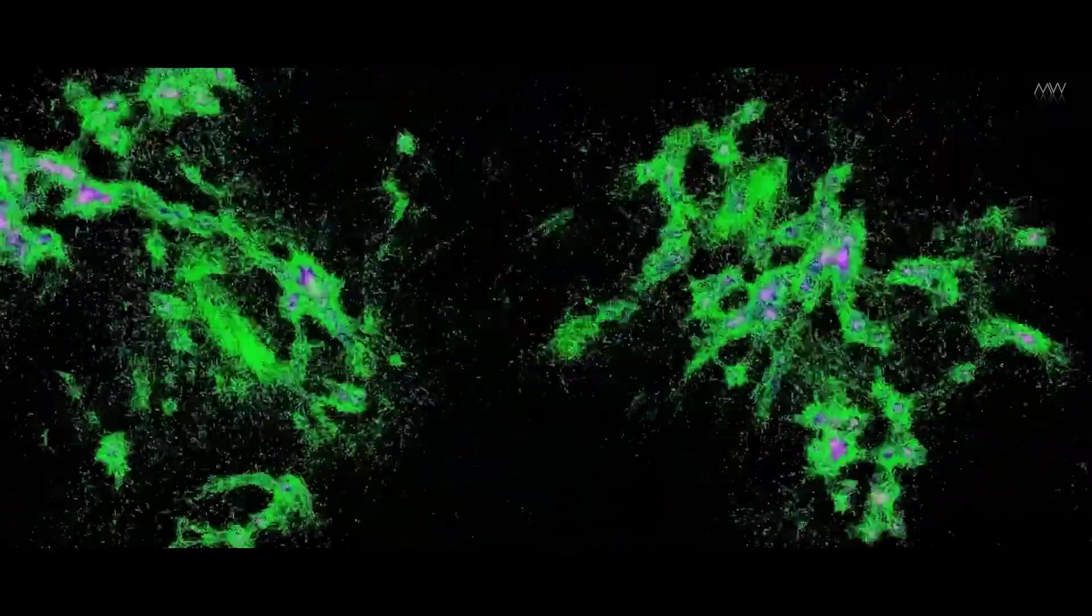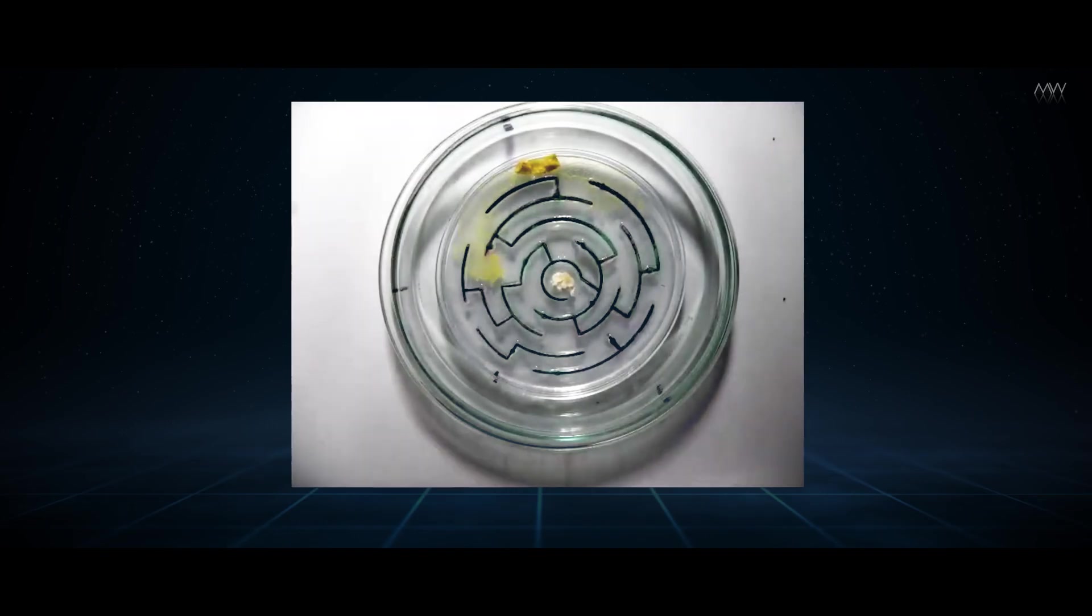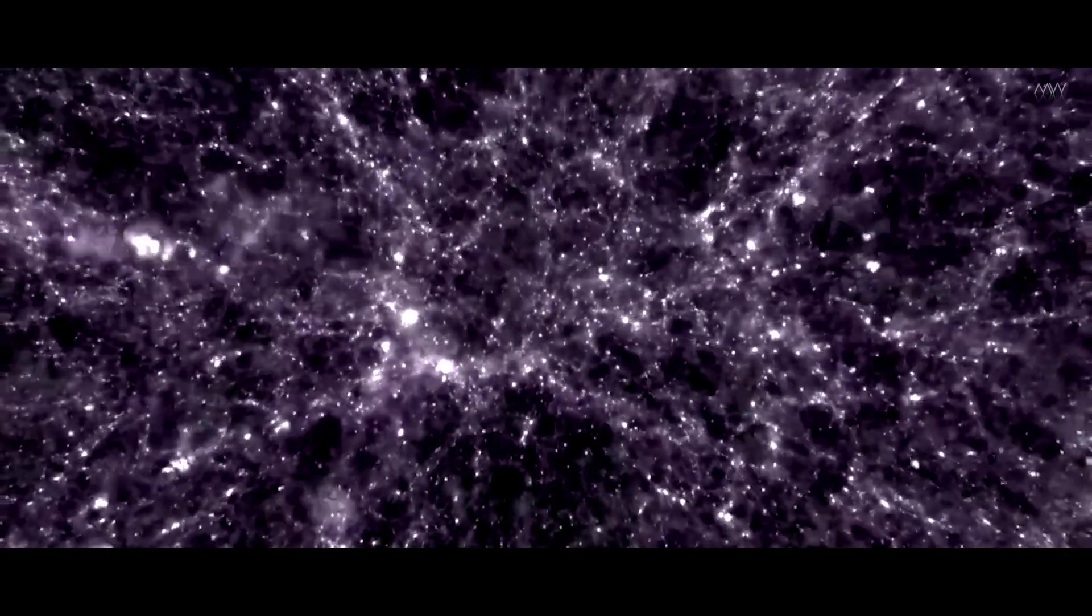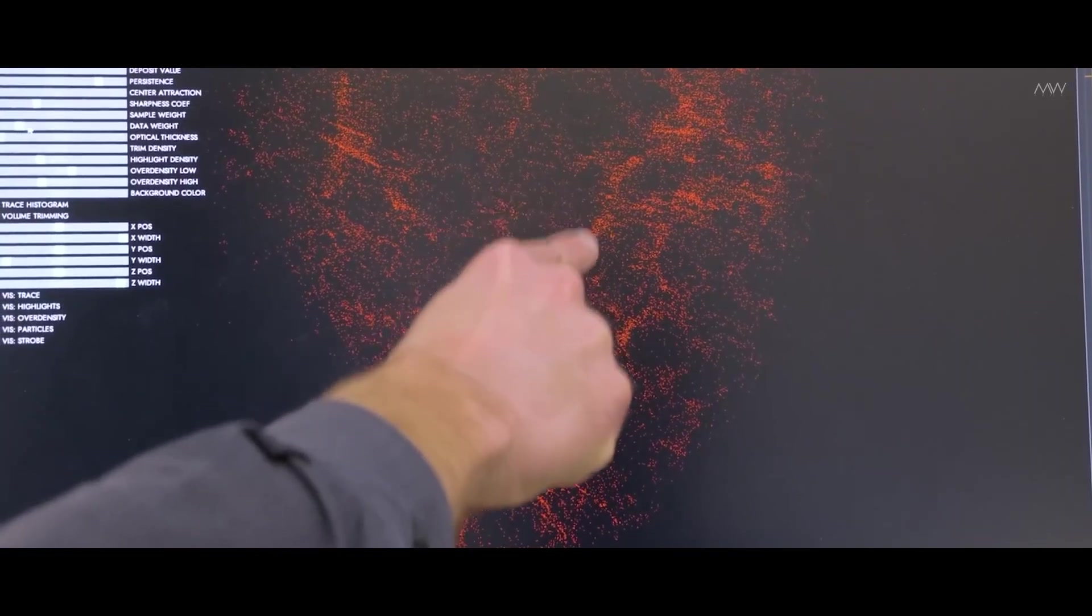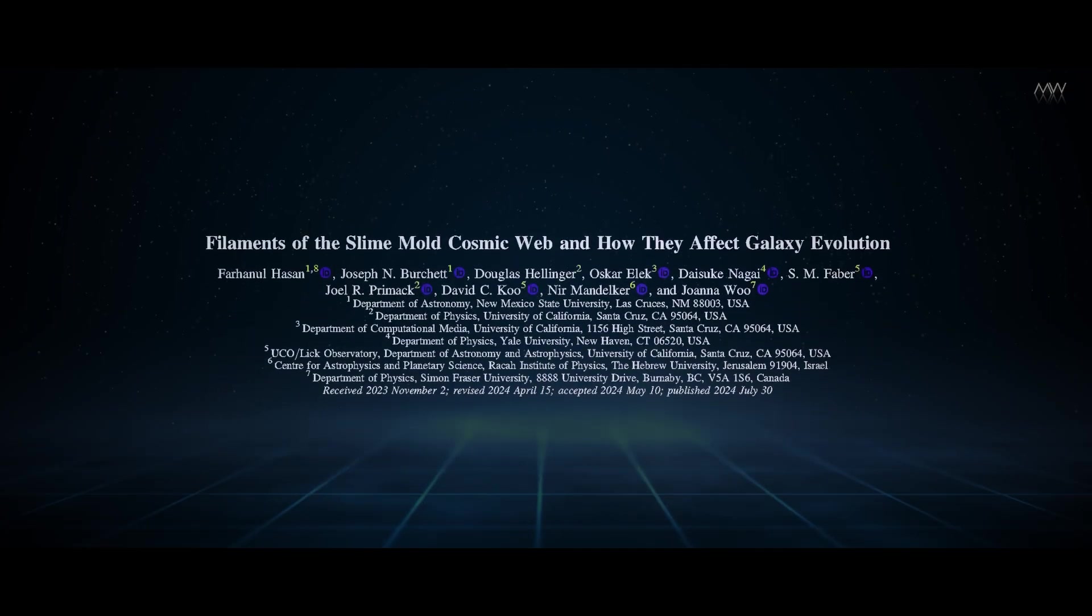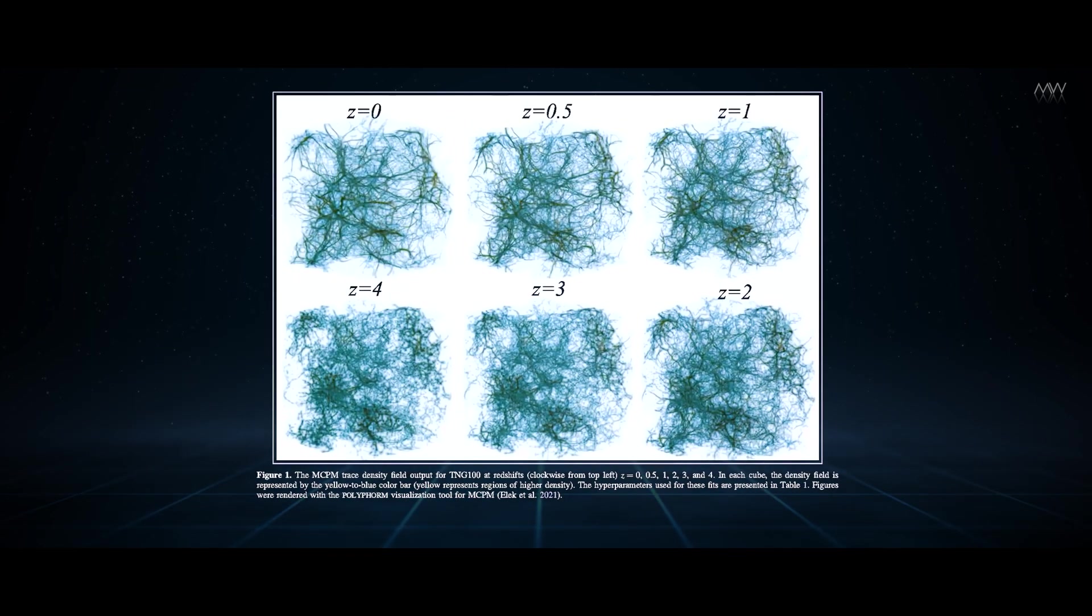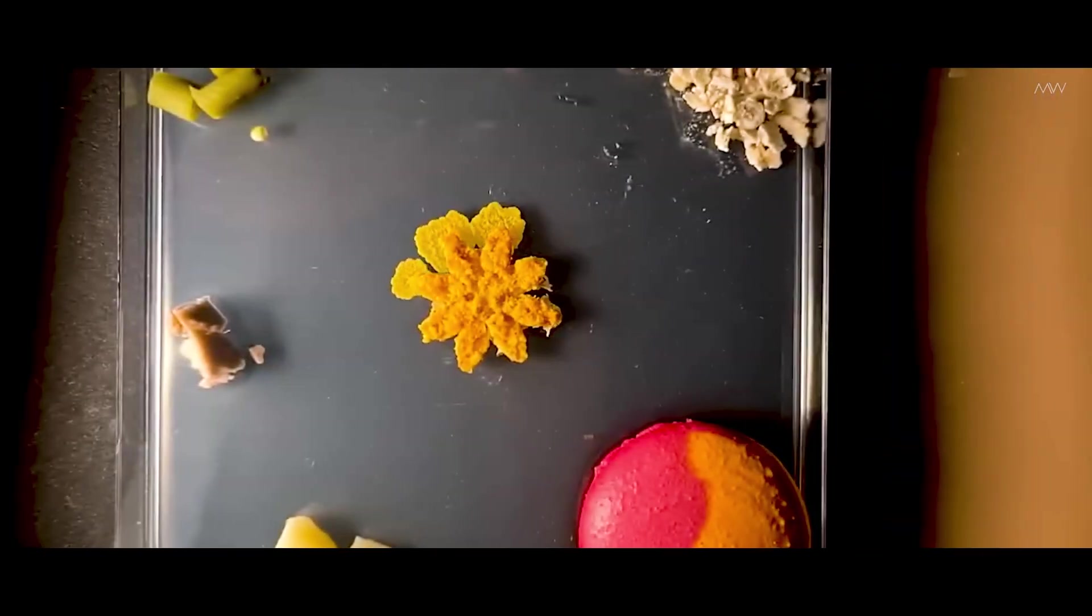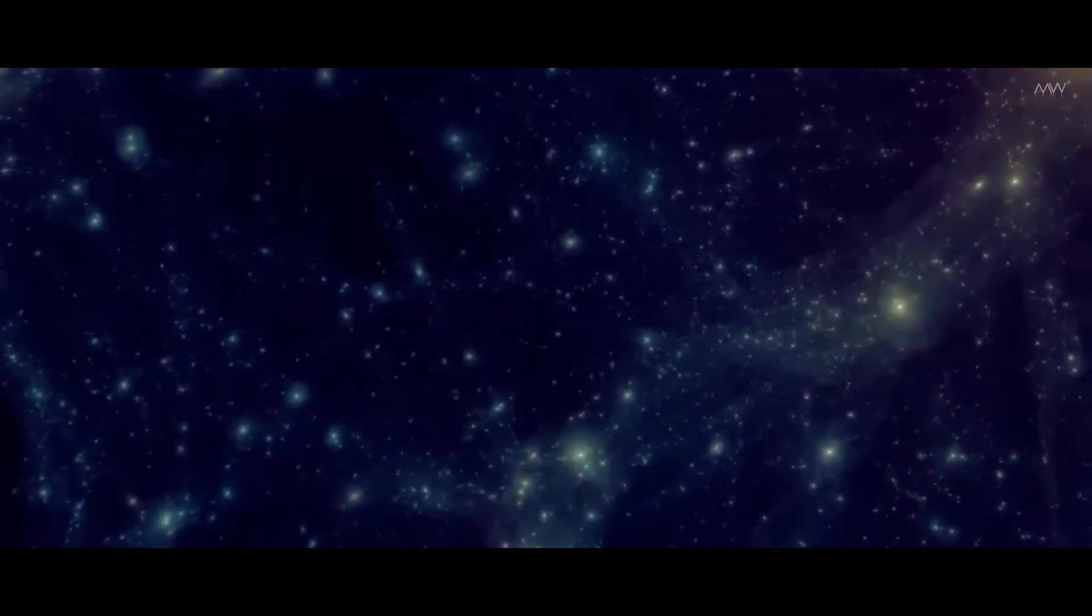He built a simulation, a method called the Monte Carlo Physarum machine. It treats slime molds as autonomous agents - tiny digital blobs moving through space, all driven by the same rule: head toward food. But in this case, food meant galaxies and dark matter halos. Each digital slime cell moves with a bit of its own chaotic personality, but they all obey the same instinct, and together they weave a network. And here's the shock - it worked, not just a little. The resulting model didn't just replicate known galactic structures, it unveiled new filaments, subtle connections, and previously undetected threads in the cosmic web that standard simulations had missed. The algorithm outperformed state-of-the-art astrophysics in detailing the cosmic skeleton of the universe.